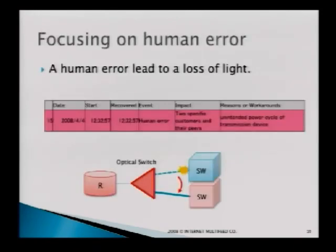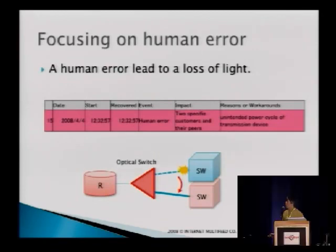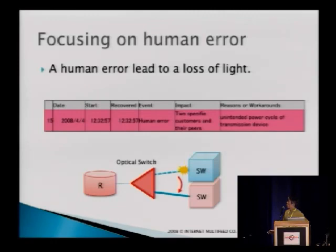The optical switches are always watching the light from the Ethernet switches. Focusing on the human error case: we mistakenly powered off a transmission device. Fortunately, the optical switch detected the failure and instantaneously changed to the backup port, so this trouble did not affect our customers' network at all.